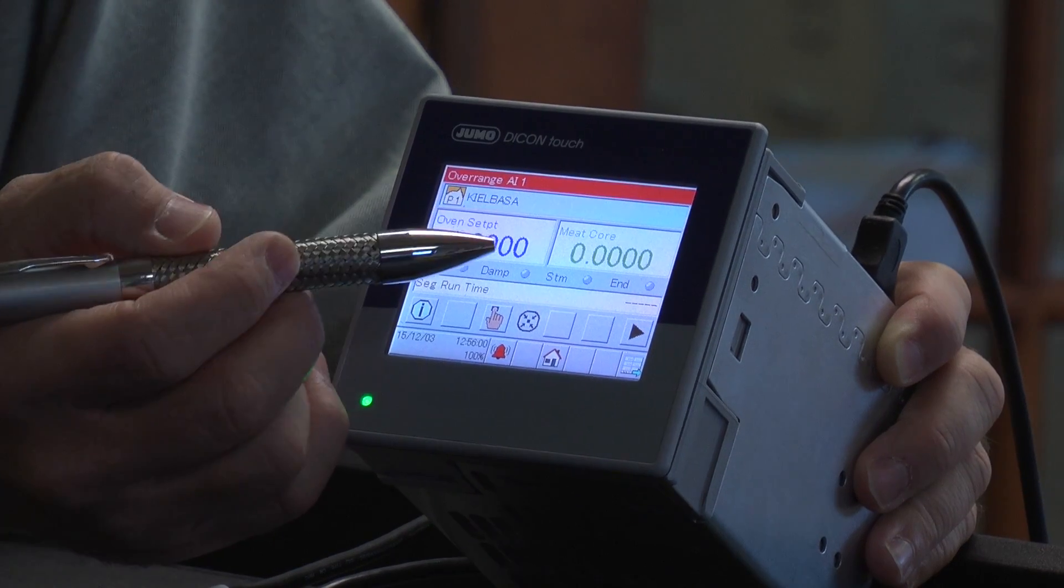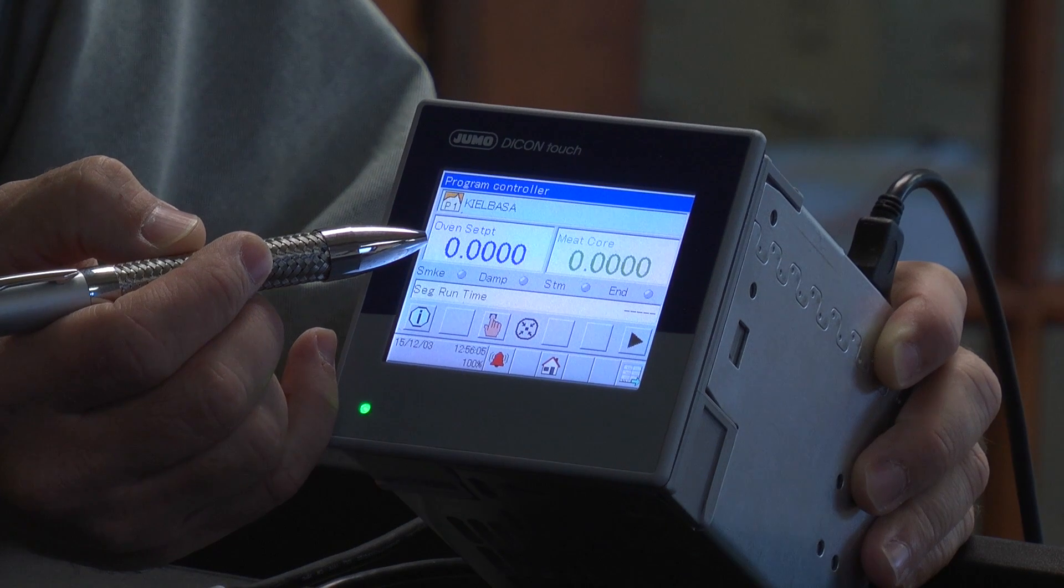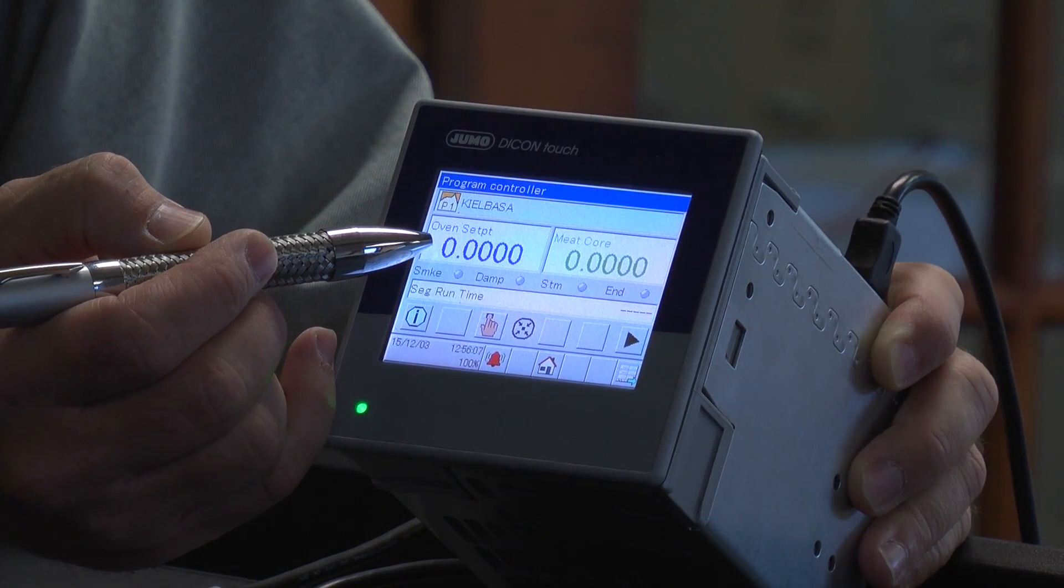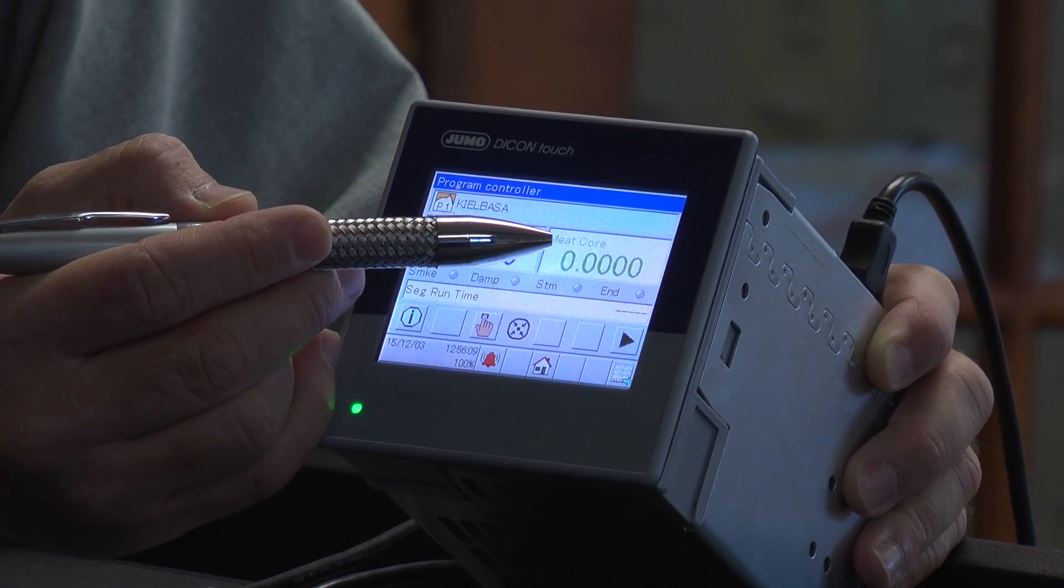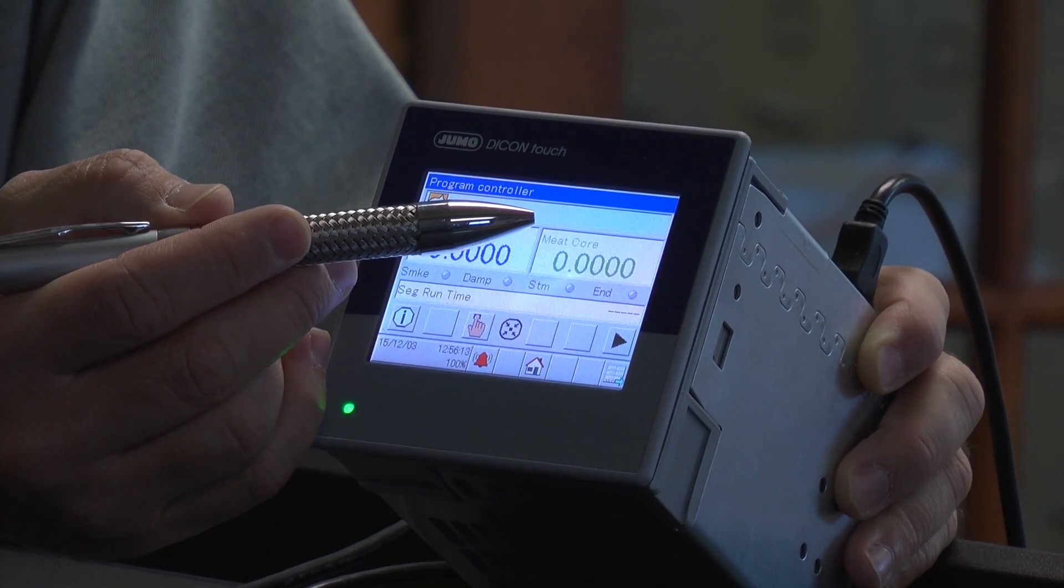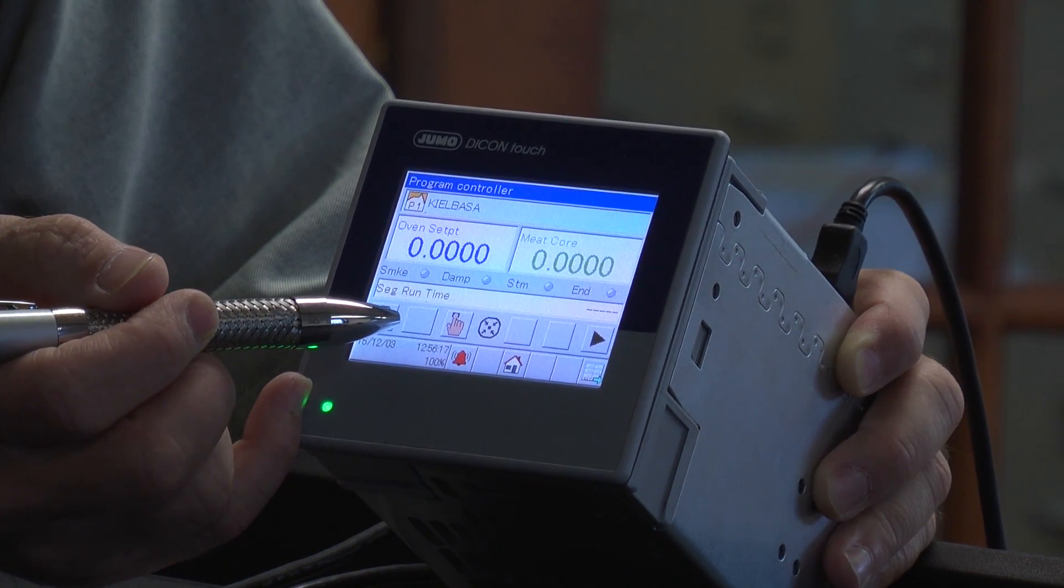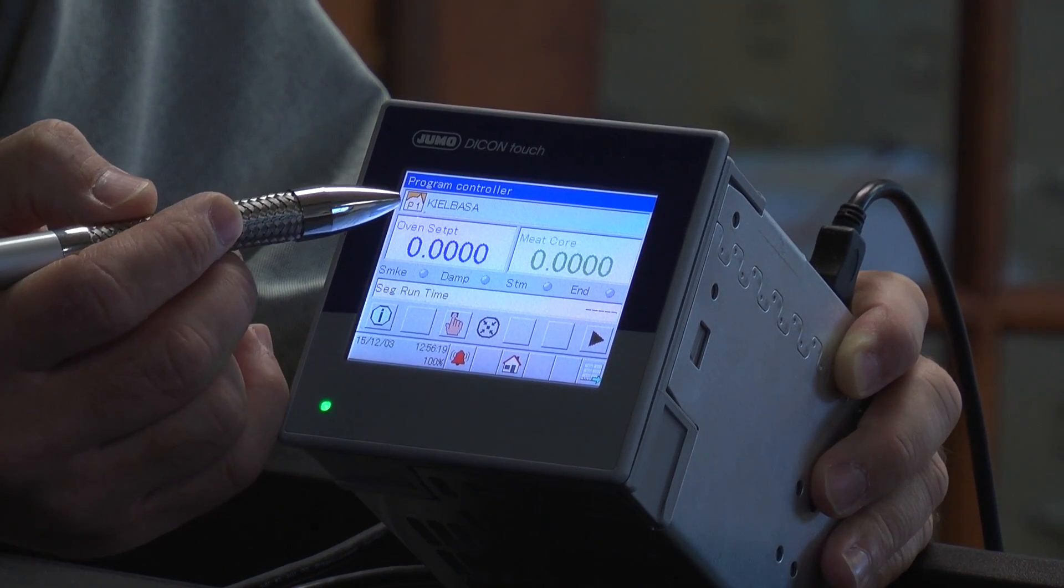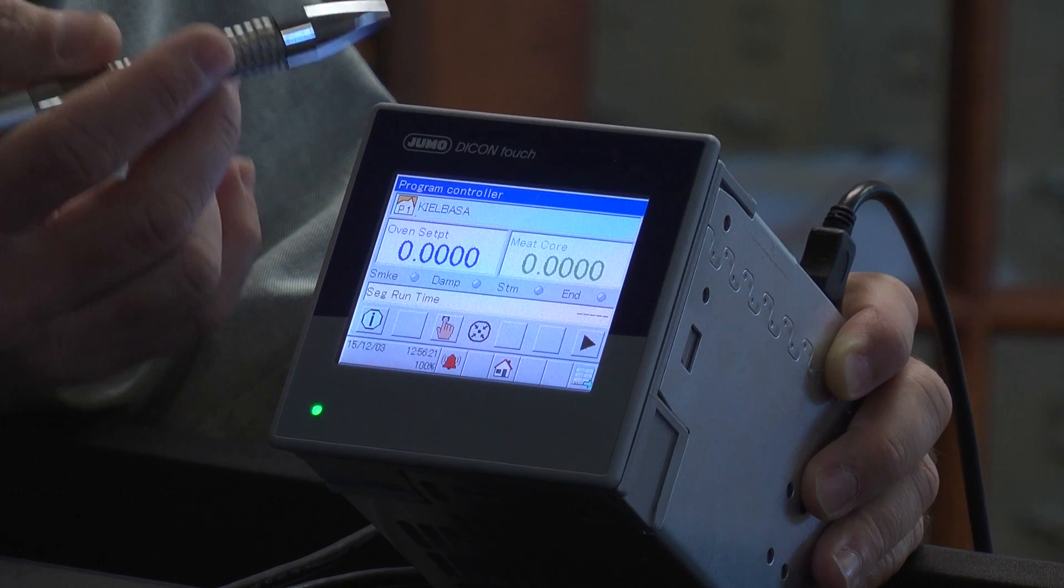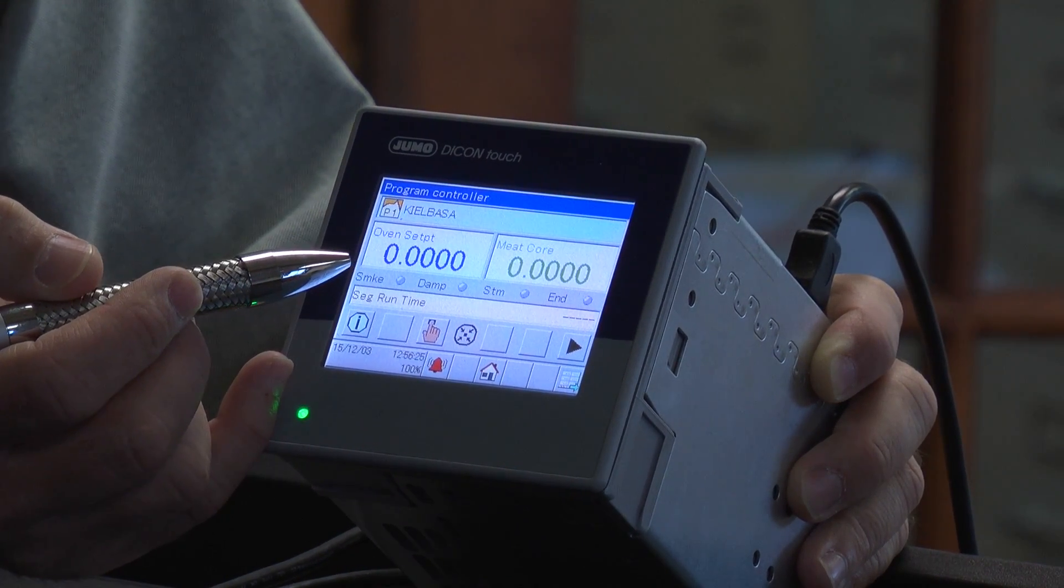This is the two channel model so they can get two inputs. One is going to be the oven temperature and the other is going to be their core temperature of the meat. They're going to have a meat thermometer. The buttons down here allow you to start the recipe and this one's kielbasa. They have hot dogs and smoked turkey and other up to ten profiles that you can have.